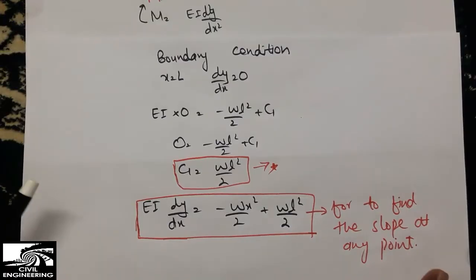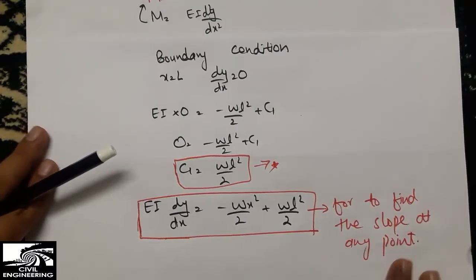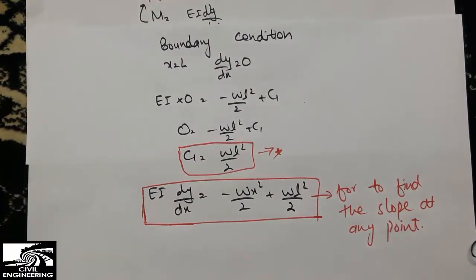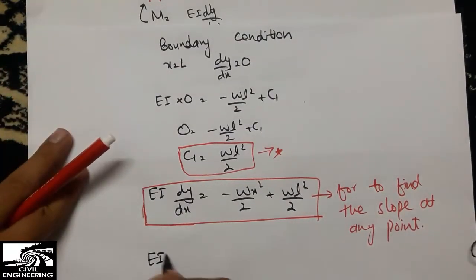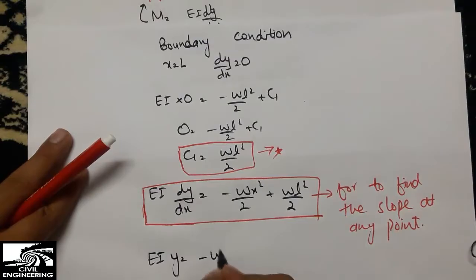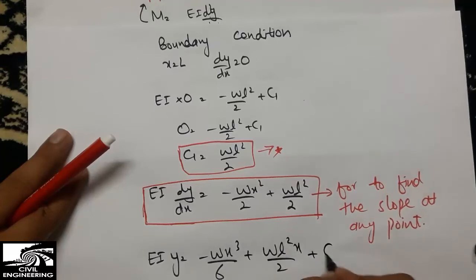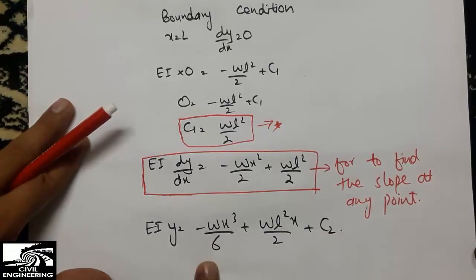Now we are interested to find the deflection. We integrate the slope equation again. By integrating, we get EI times y equals minus Wx³ divided by 6, plus WL²x divided by 2, plus a constant C2.